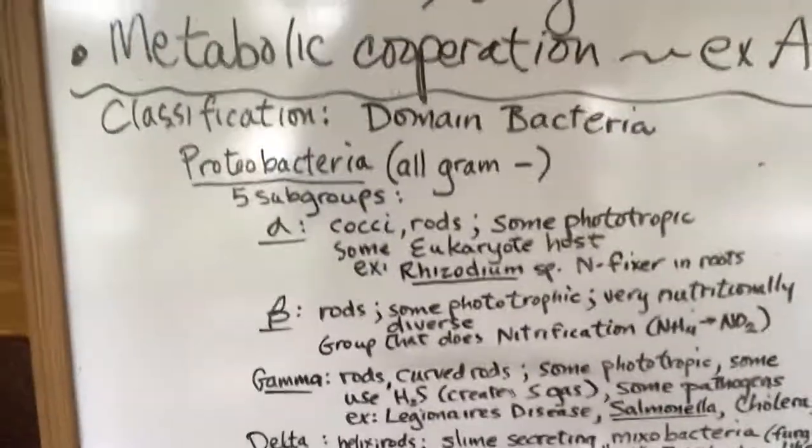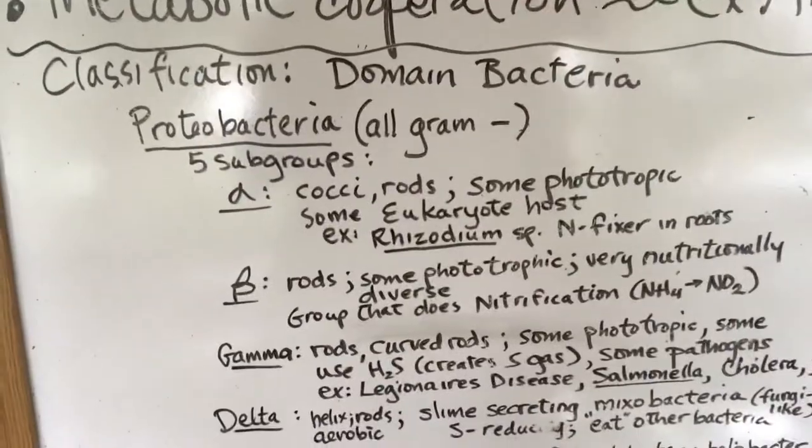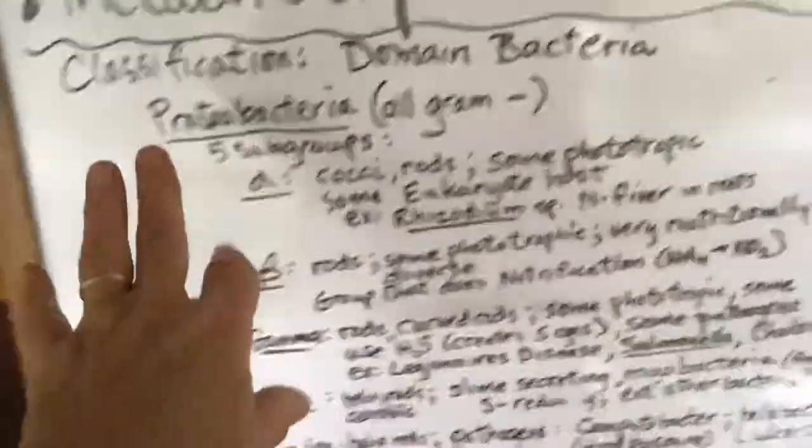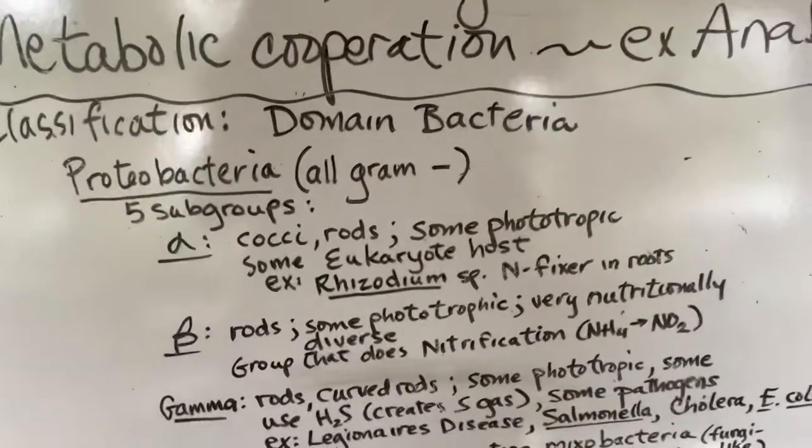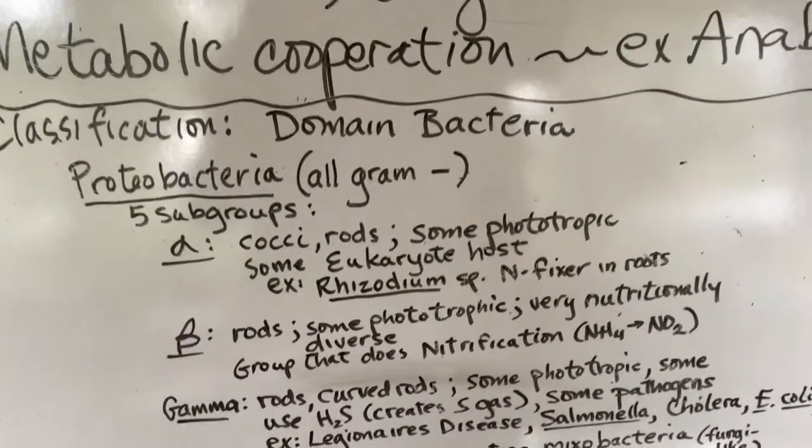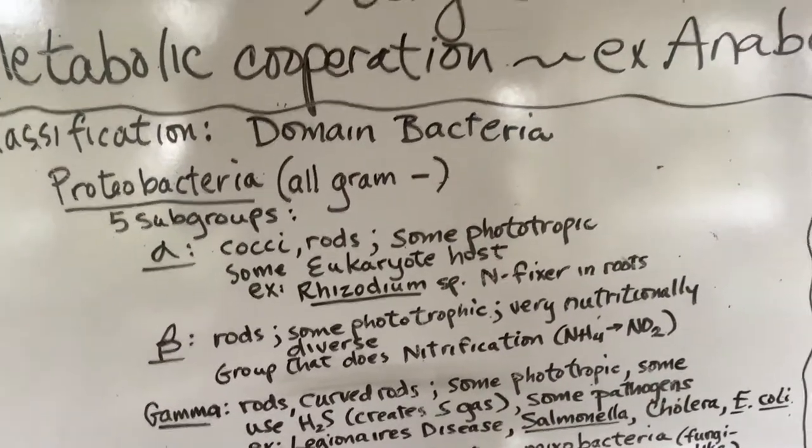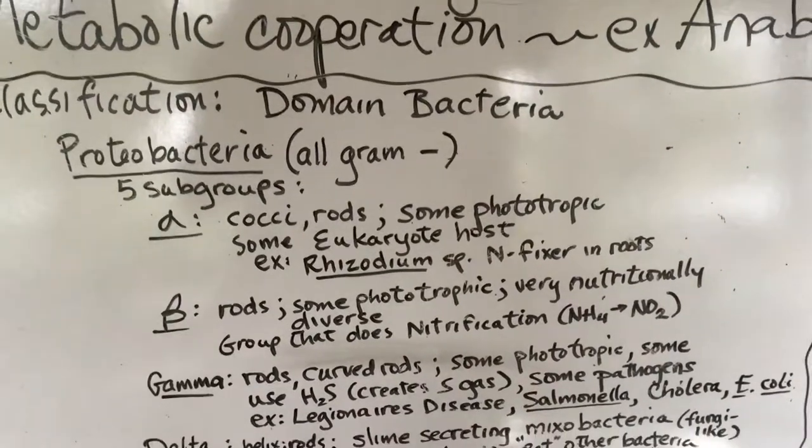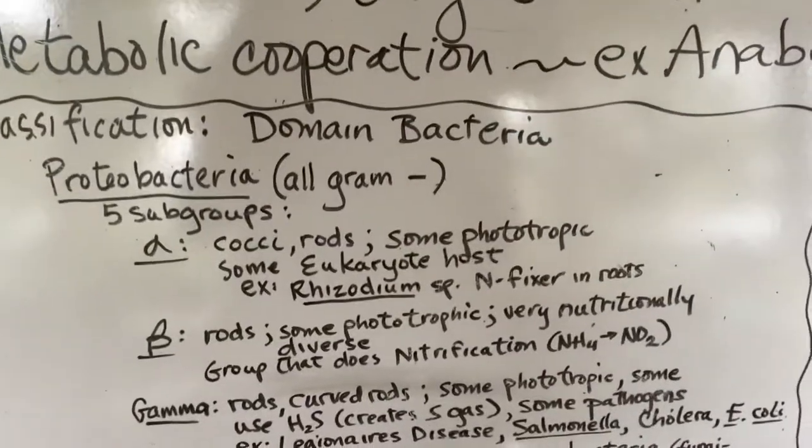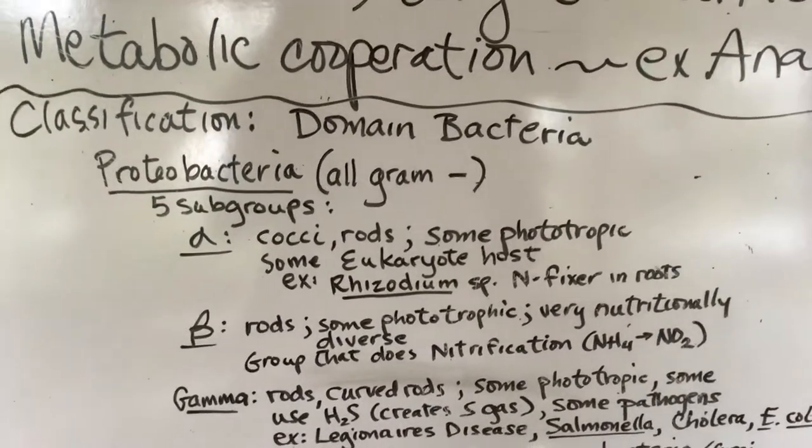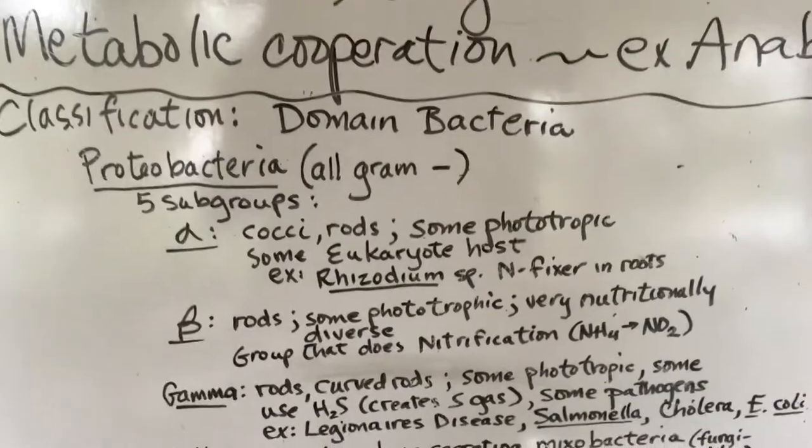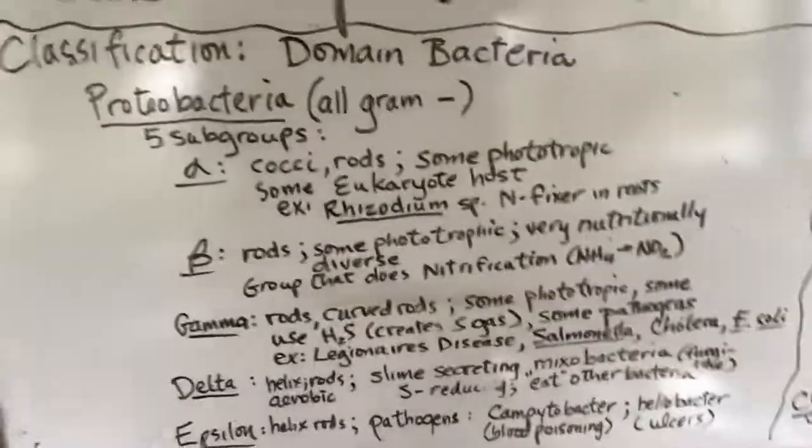Proteobacteria - there's five subgroups. The alpha are mostly cocci and rods. Some are phototrophic but most are heterotrophs. A lot of them live in eukaryote hosts. An example is Rhizobium, which is the nitrogen fixer that you find in roots, and I believe you're going to be looking at that in the lab.